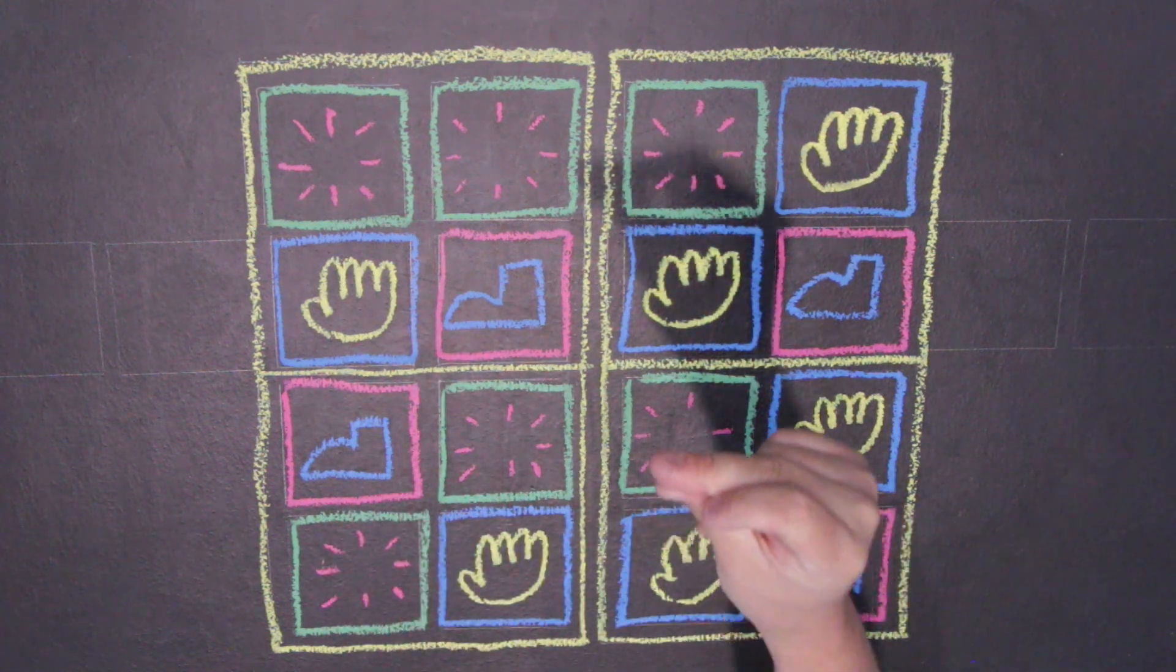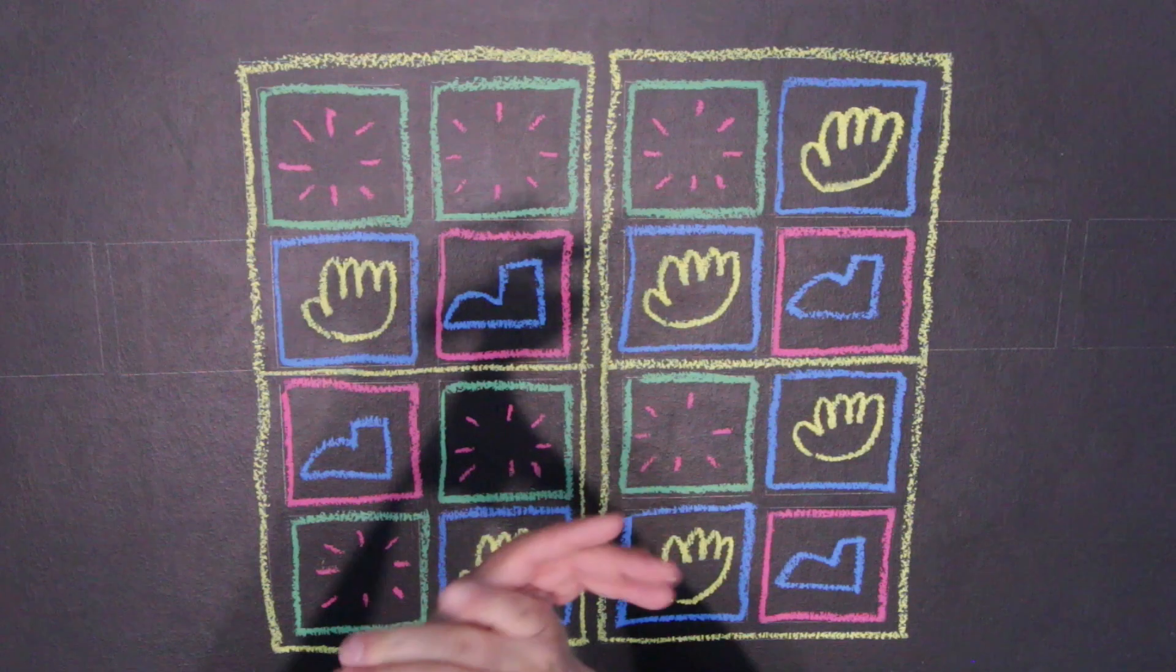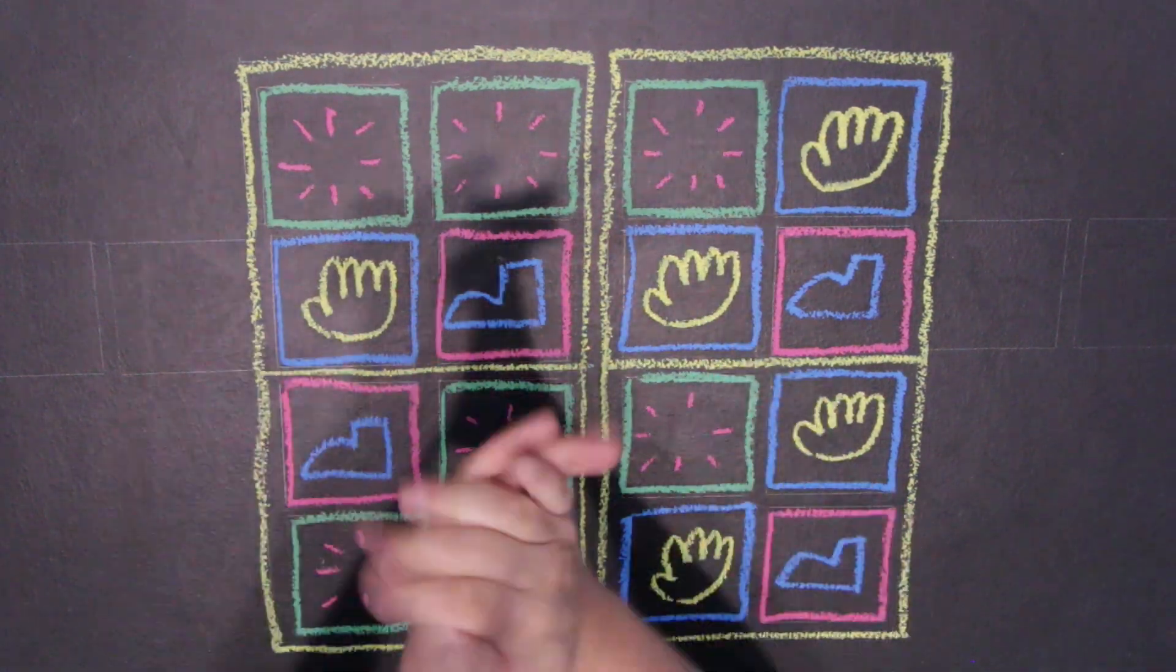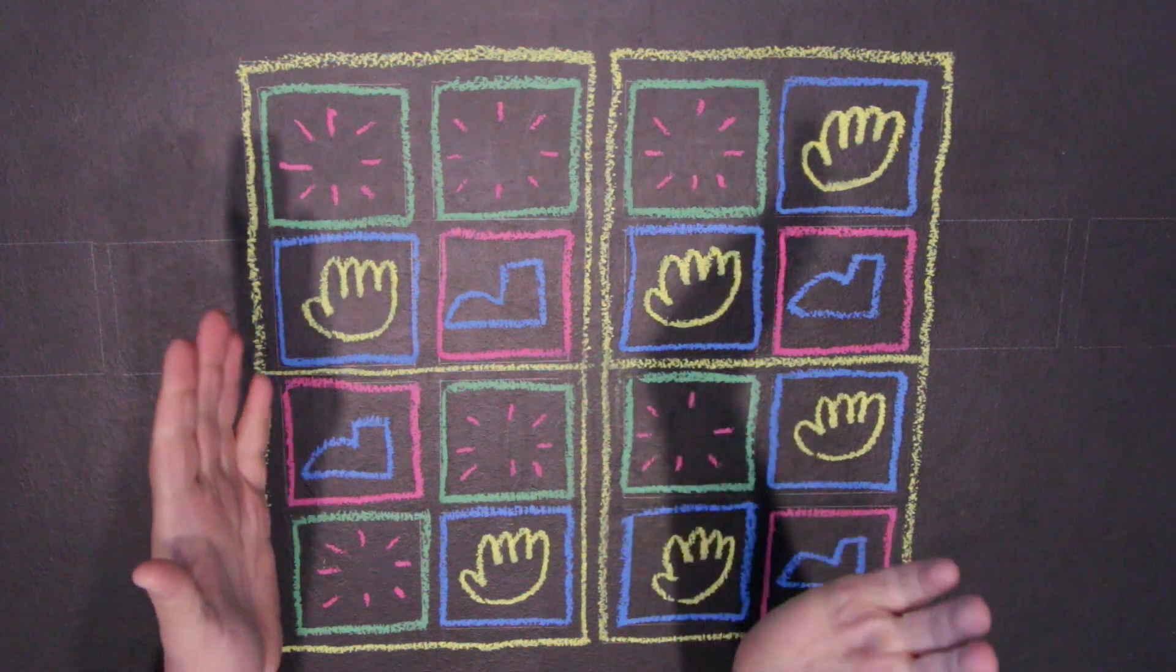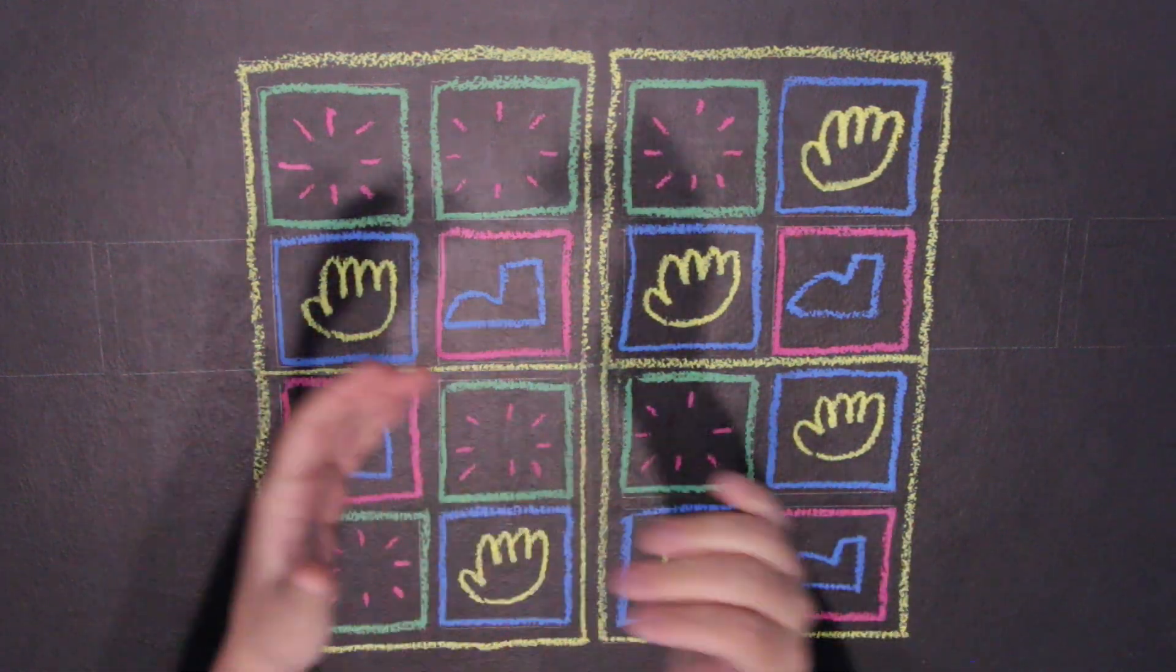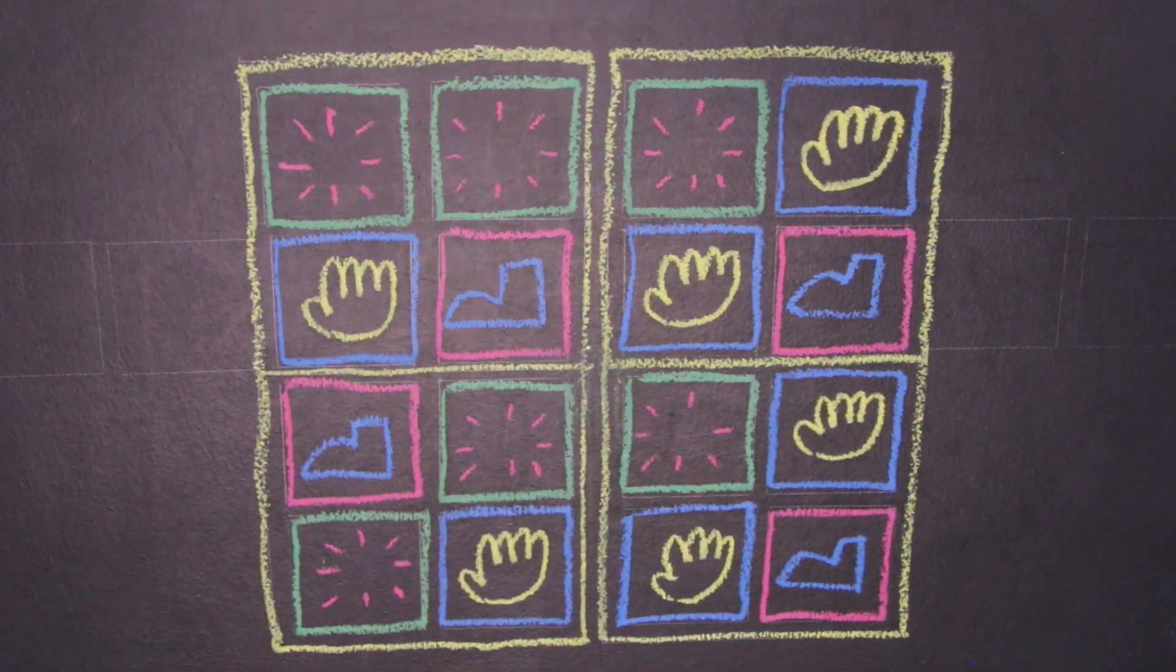Lastly, have each group write four four count measures of song and perform them. Then have the groups perform their compositions simultaneously. Ask students to describe what it's like to have the musical groups come together like this.